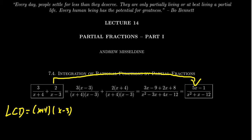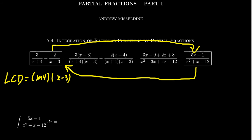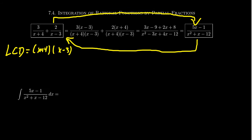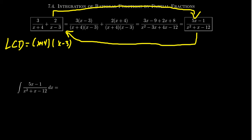For integration, it's useful to reverse this process. Suppose we want to integrate (5x-1)/(x²+x-12). We might try u-substitution with u = x²+x-12, so du = (2x+1)dx. Unfortunately, we can't manipulate the numerator to get 2x+1 in any convenient way. So what do we do?